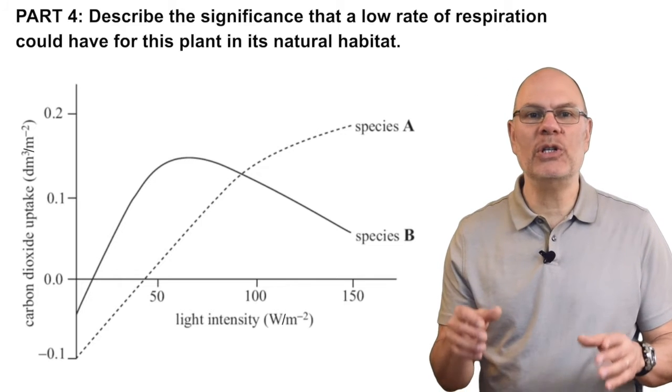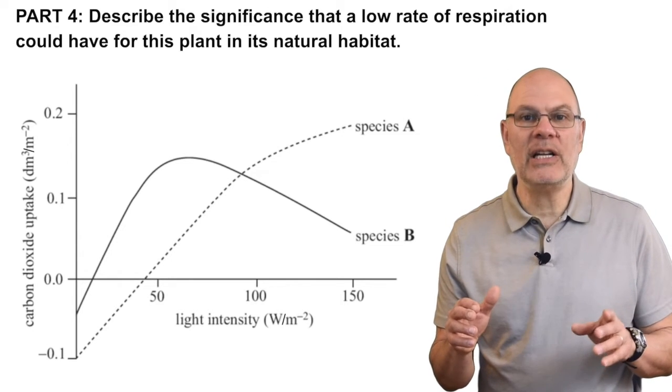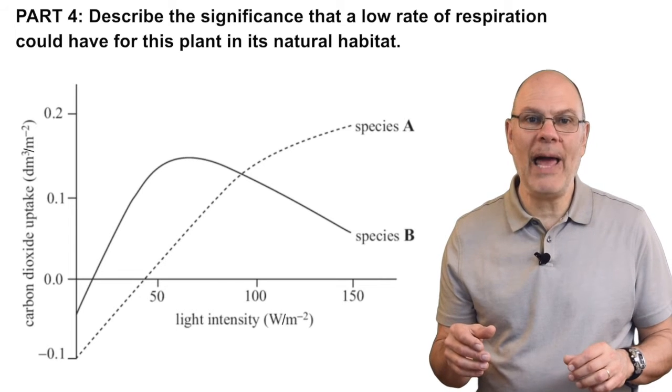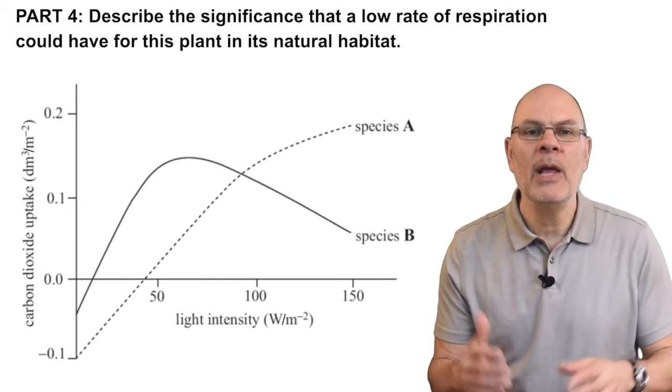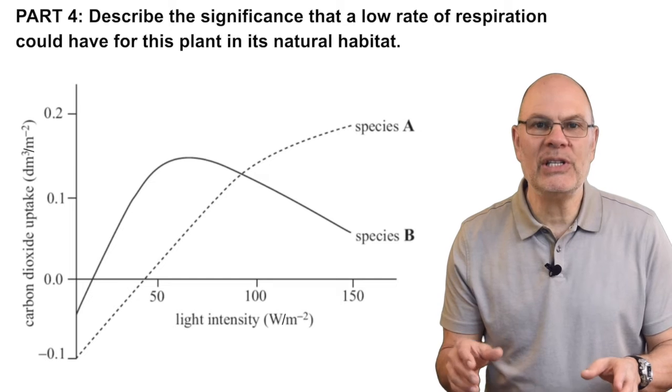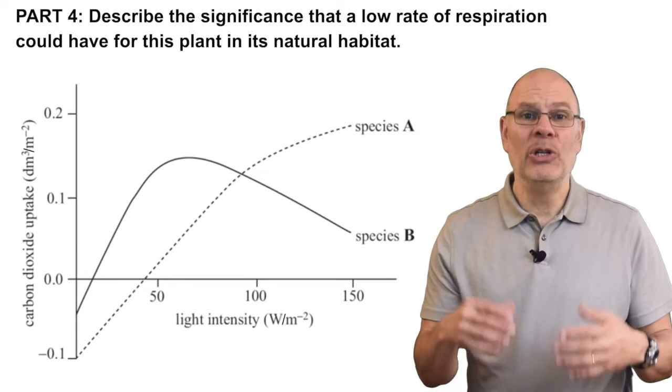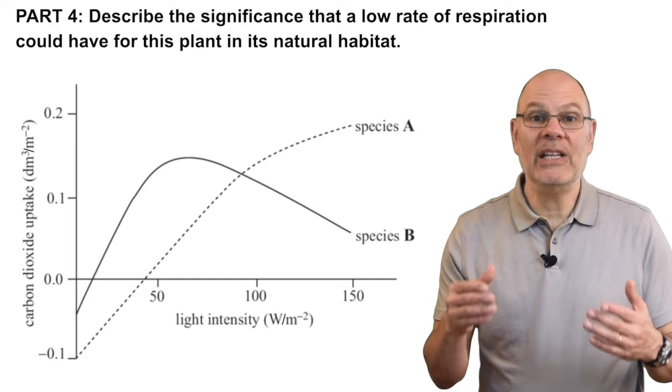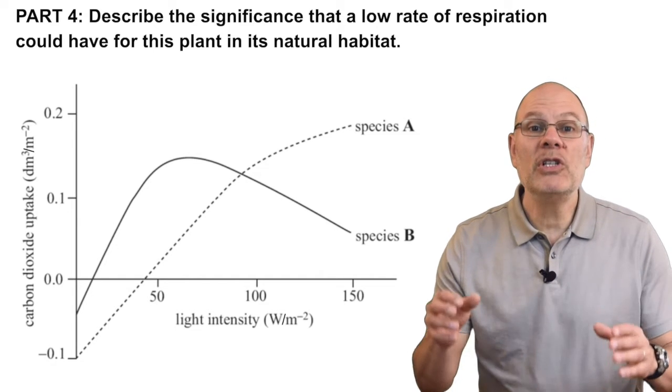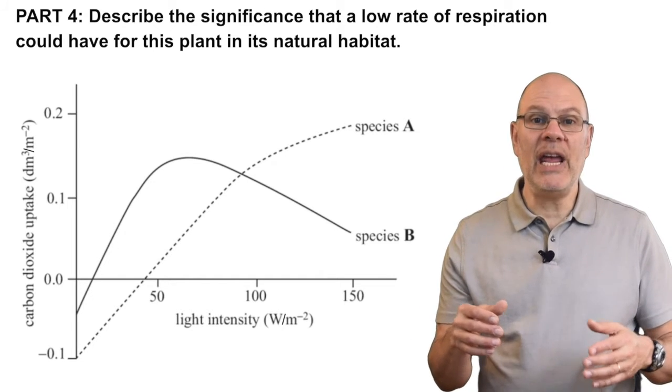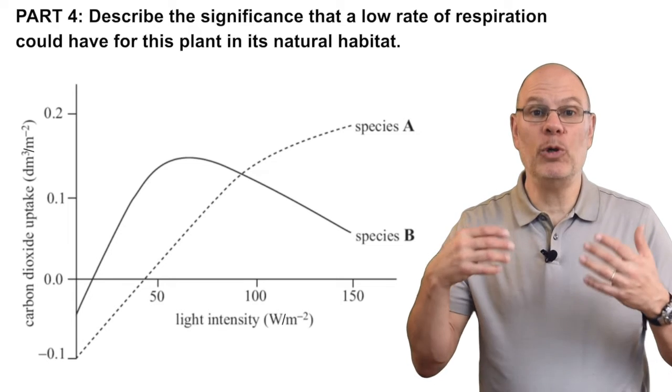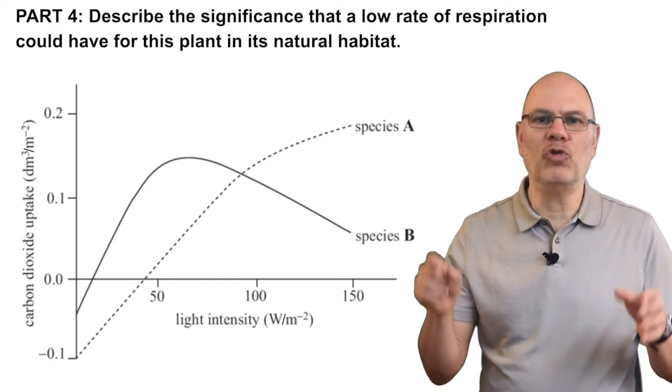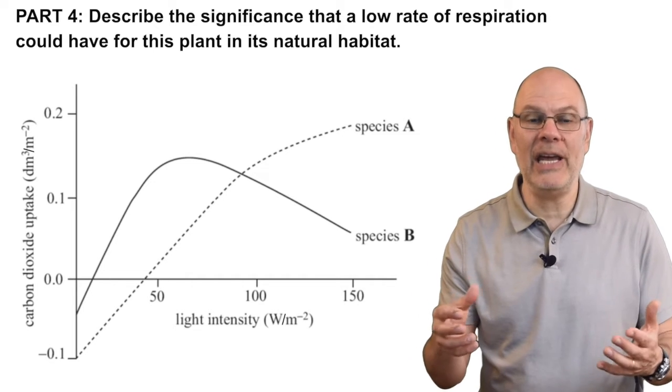Part four is asking you to describe the significance that a low rate of respiration could have for a shade plant in its natural habitat. Well, let's think about this. The amount by which photosynthesis exceeds respiration determines the growth rate of a plant. Plant B is adapted to living in shady light conditions. Because of low light intensities in the shade, plant B is going to have a reduced rate of photosynthesis. There's just not a lot of light available to drive photosynthesis in the shade.